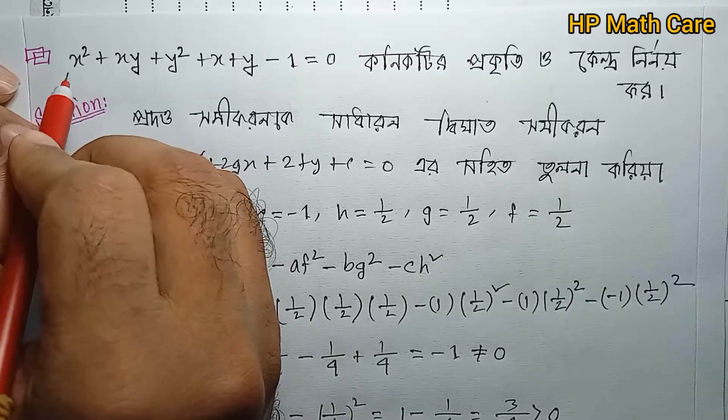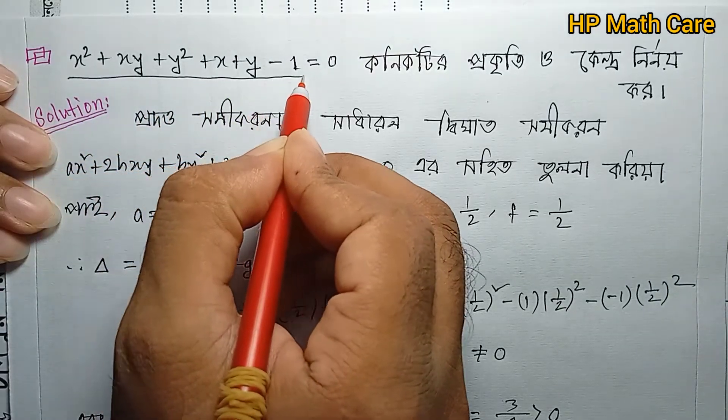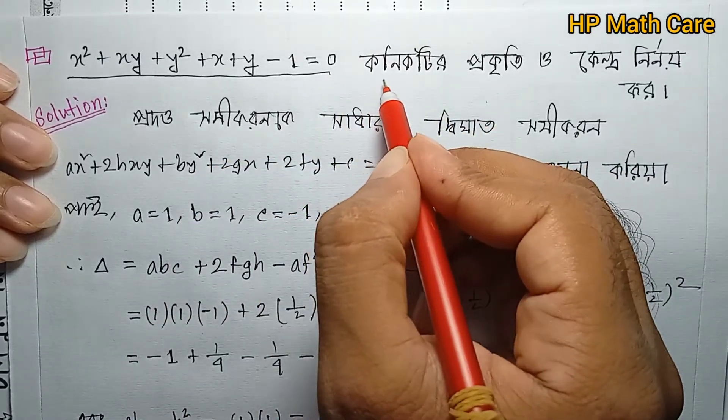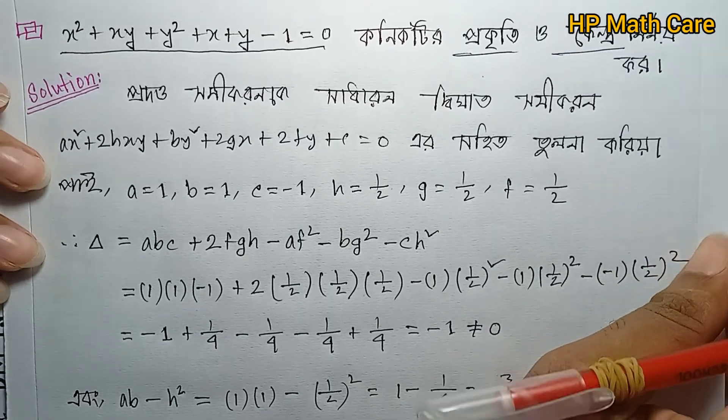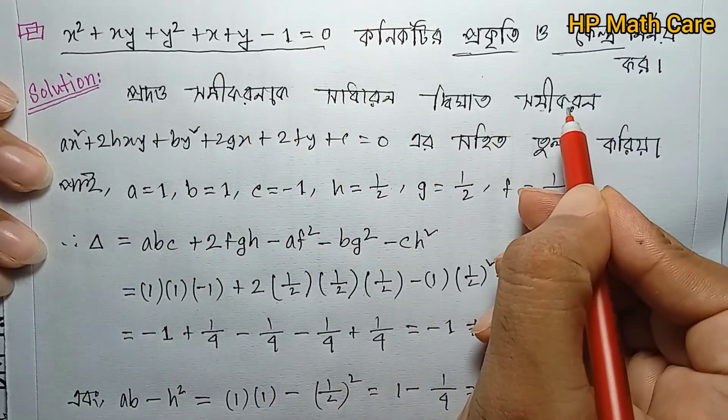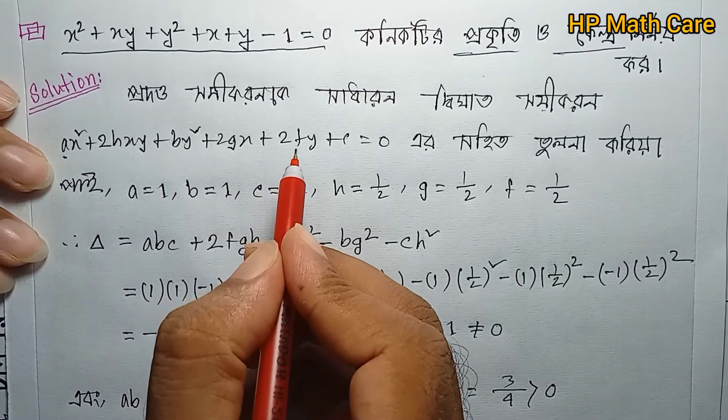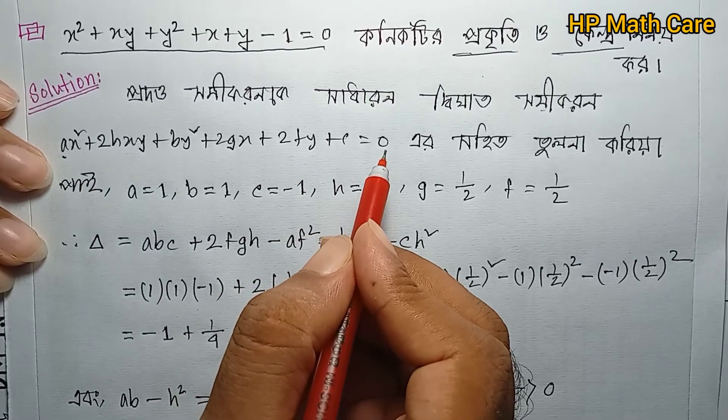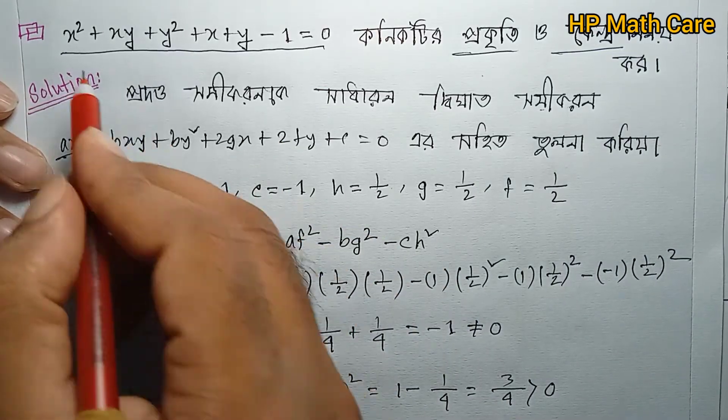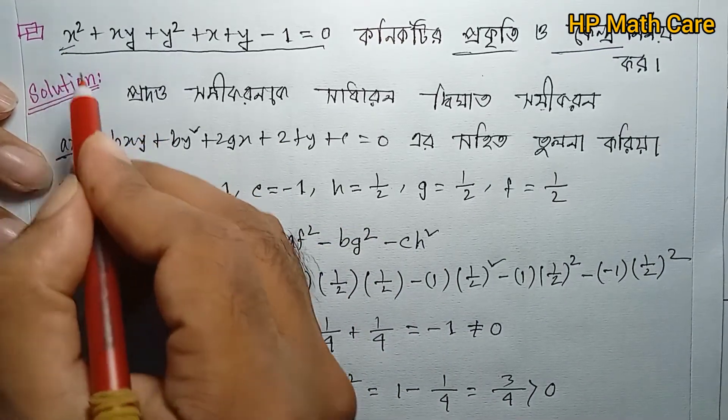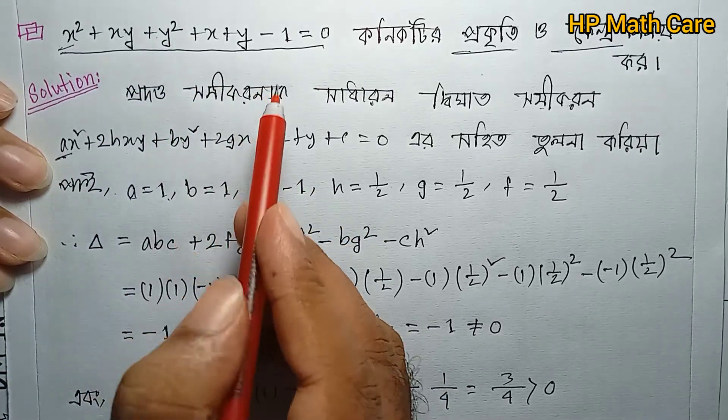Let's check the next problem: x² + xy + y² + x + y - 1 = 0. We need to find the nature and center of this conic.